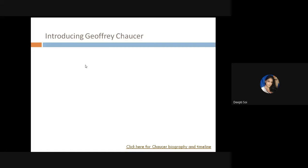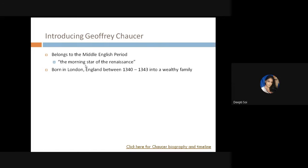Looking in more detail at the life of Geoffrey Chaucer: he belongs to the Middle English period and is rightfully known as the Morning Star of the Renaissance. He was born in London into a fairly well-to-do family. His father John Chaucer was a wine merchant who supplied the cellars of King Edward III, which made it easy for Geoffrey to enter court.